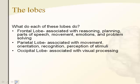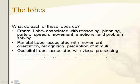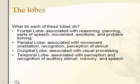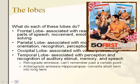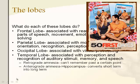The occipital lobe handles visual processing — distinguishing what you're seeing. The temporal lobe deals with stimuli from sound, memory, and speech. Two types of amnesia: retrograde amnesia is where trauma causes inability to remember anything before a certain point, and anterograde amnesia is a problem with the hippocampus in the temporal lobe — a difficulty converting short-term into long-term memory, so you essentially cannot make new memories.